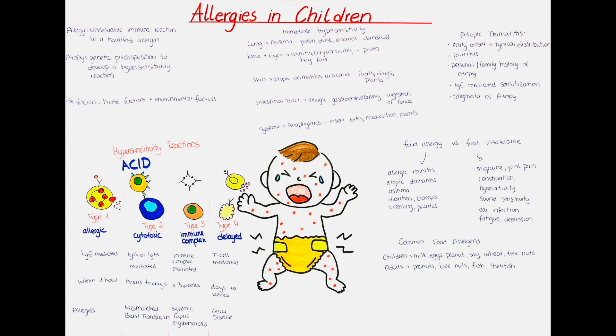Now we will talk about allergic rhinitis. It is usually defined as a symptomatic disorder of the nose, which is induced by an IgE-mediated inflammation after contact of an allergen to the membranes of the nose. It usually presents with coughing, sneezing, itching and congestion of the nose, also recurrent infections of the throat and in infants also respiratory distress.